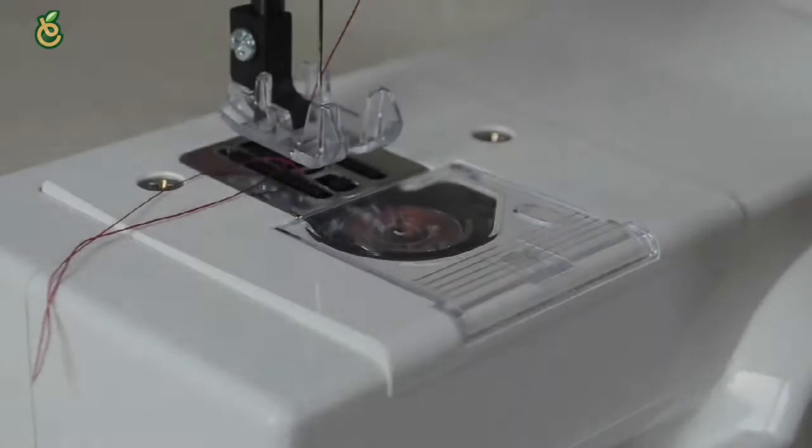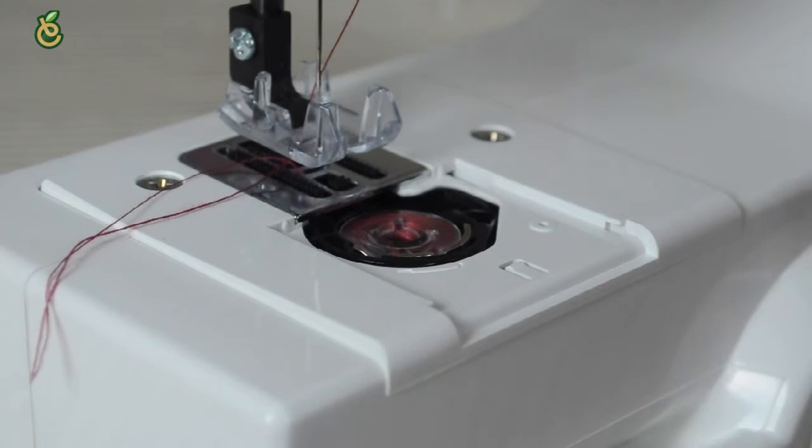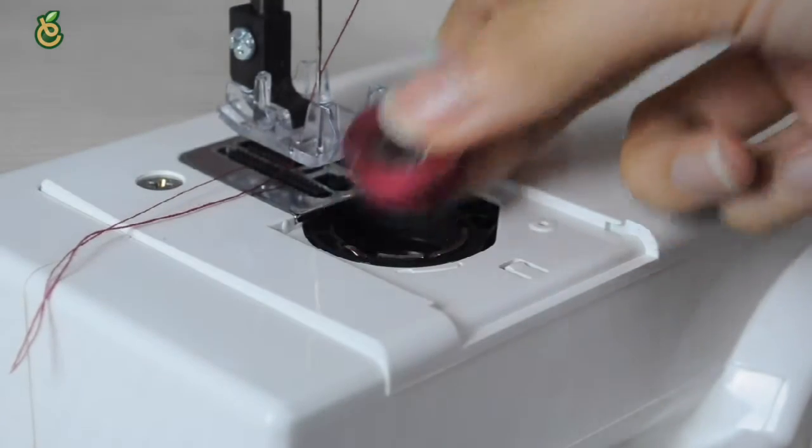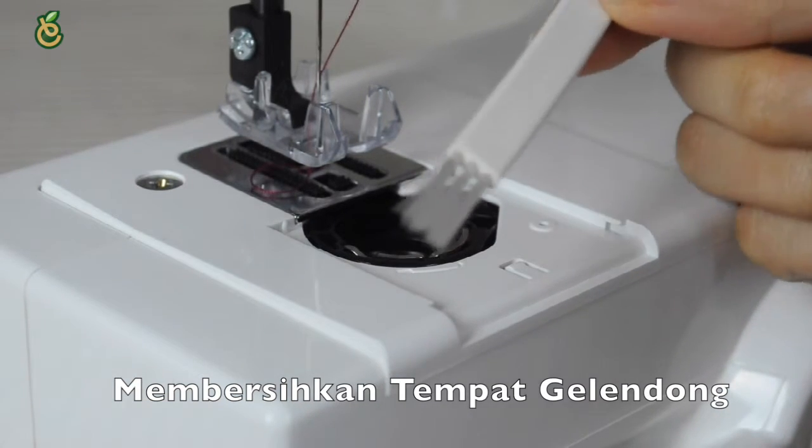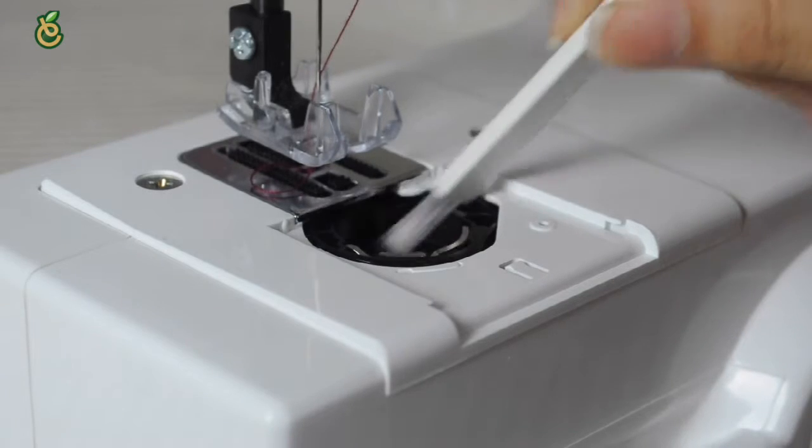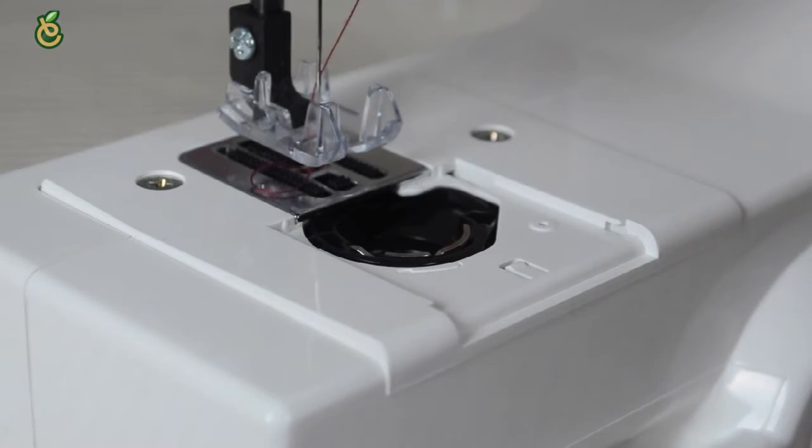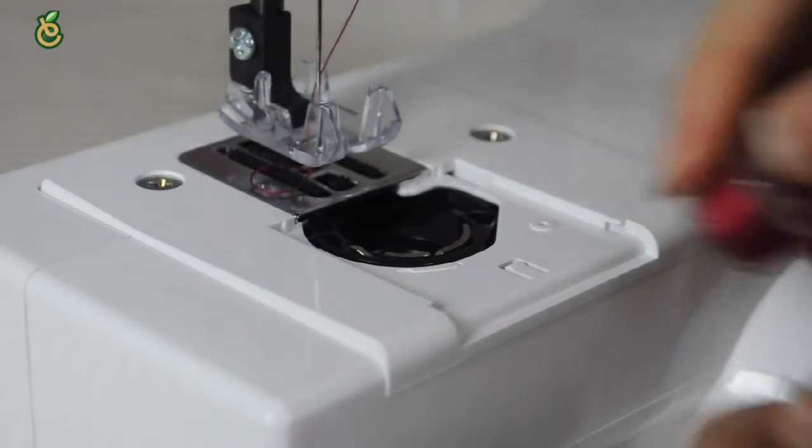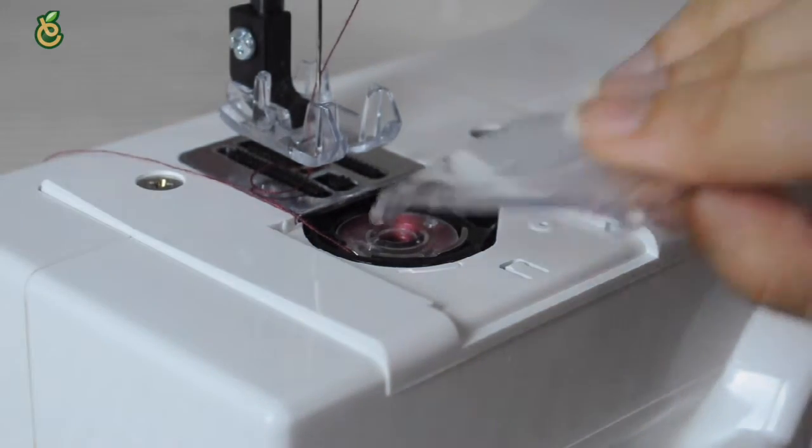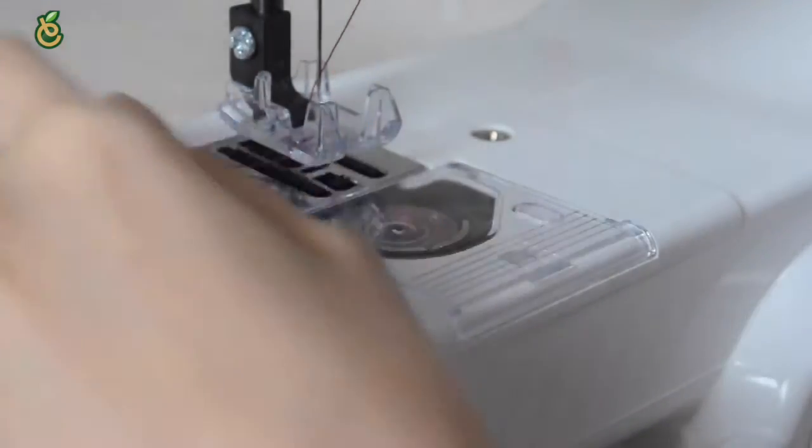Care of your machine - cleaning the bobbin holder: Remove the hook cover plate by sliding it towards you and brush out the dust with a brush or vacuum cleaner. Insert back the bobbin and attach the hook cover plate into position. Please be cautioned: disconnect the AC adapter jack before cleaning the machine for your safety.